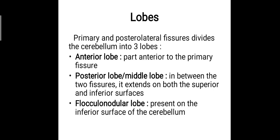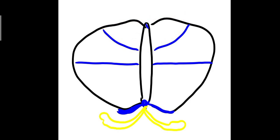The primary and posterolateral fissures divide the cerebellum into three lobes: the anterior lobe — the part anterior to the primary fissure; the posterior lobe or middle lobe, lying between the primary fissure and the posterolateral fissure; and the flocculonodular lobe, which is present on the inferior surface of the cerebellum. In the diagram: here is the anterior lobe, then the middle lobe, and then the flocculonodular lobe.